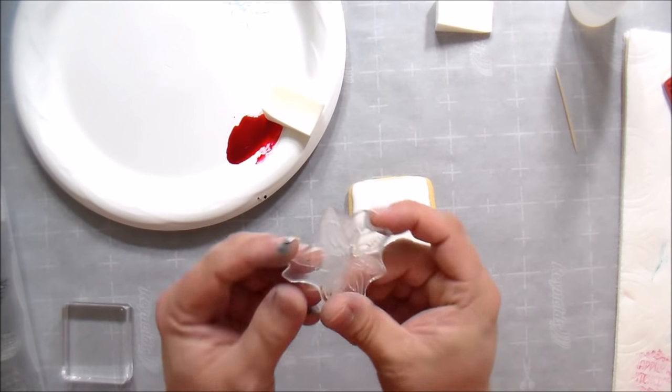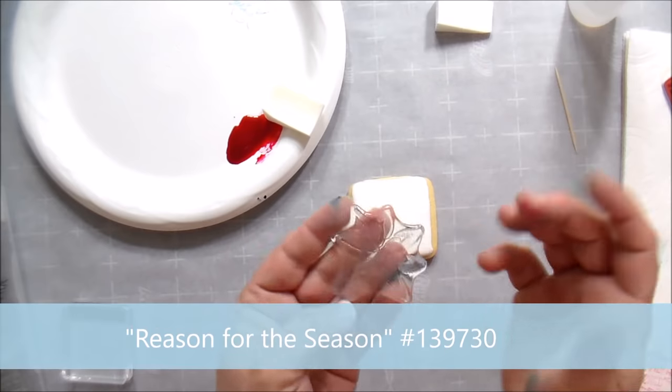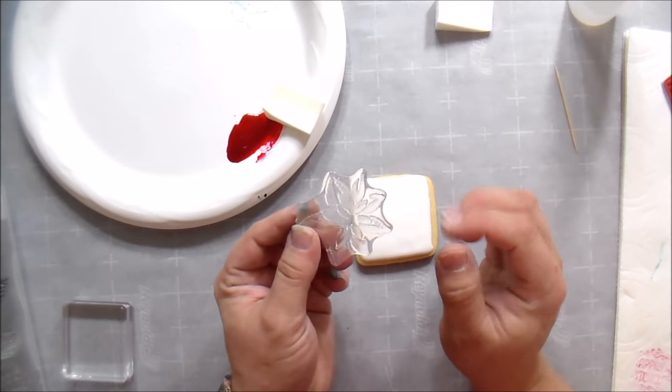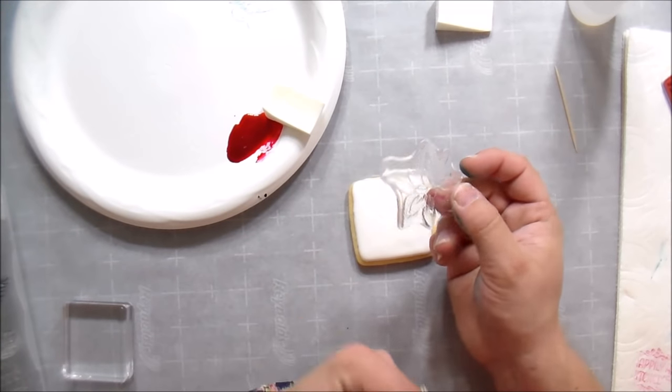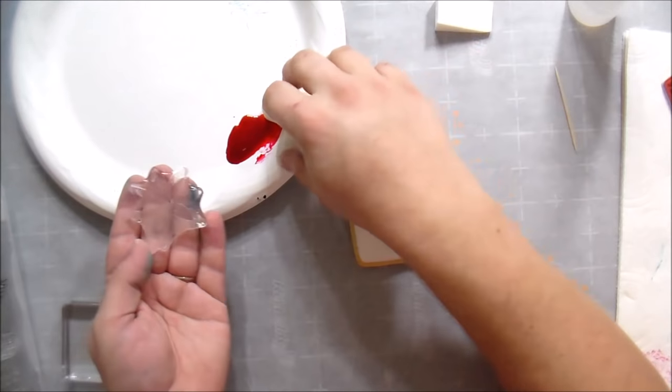So you can do the same thing using a photopolymer clear stamp. The one thing I will warn you about these stamps is when you do use this, it is going to stain your stamp. Be prepared for that because the food coloring will stain the stamp. You won't be able to get that off.